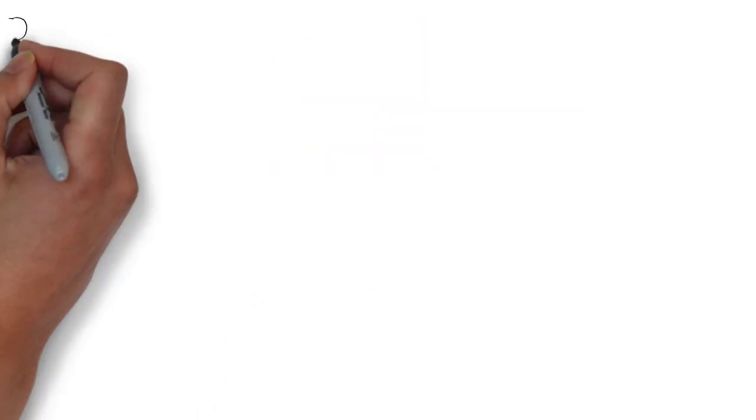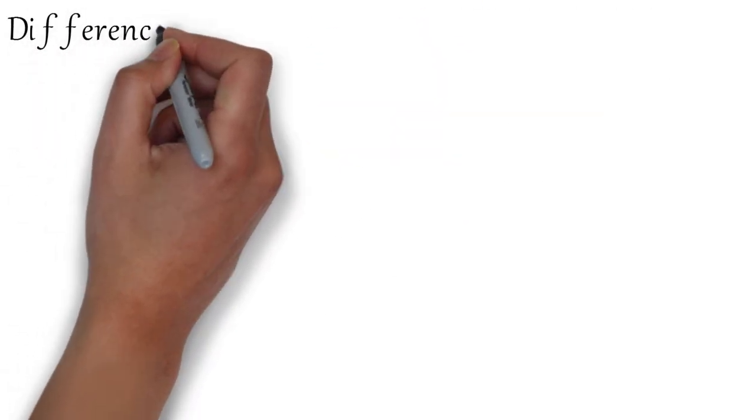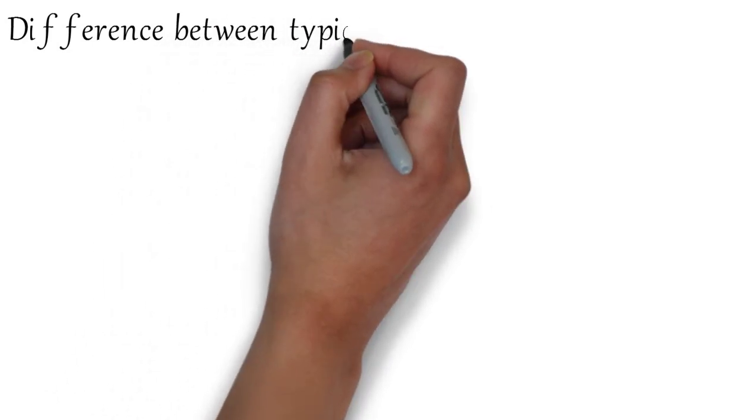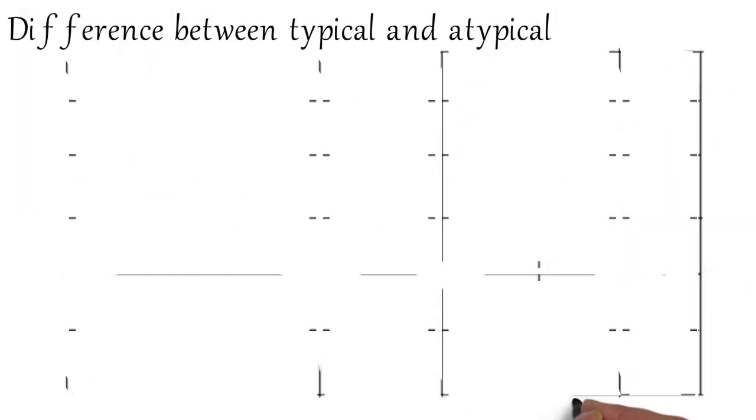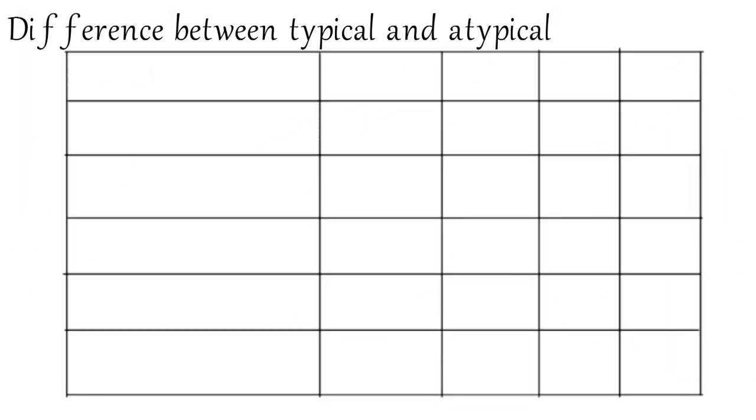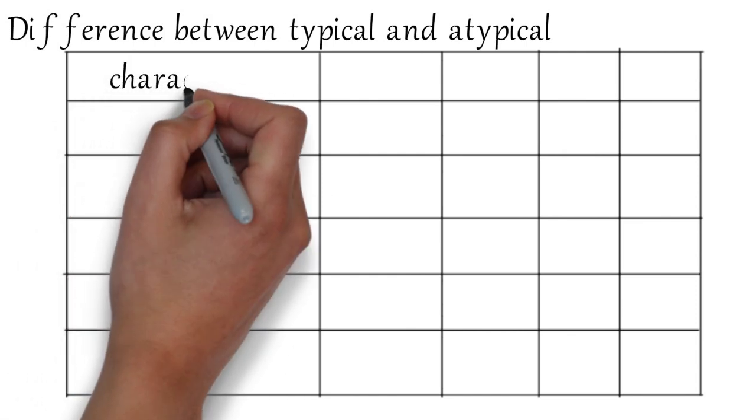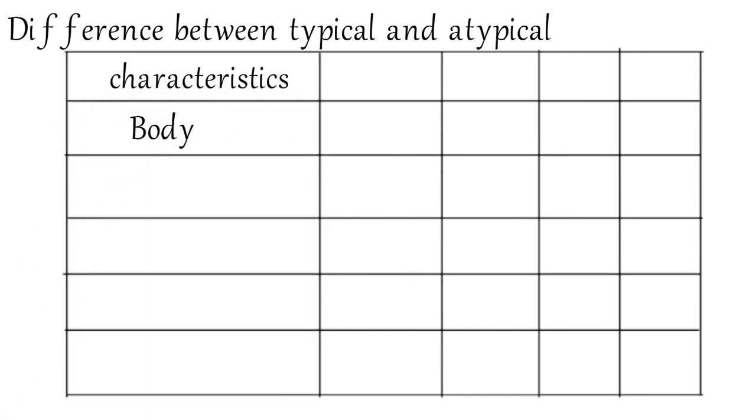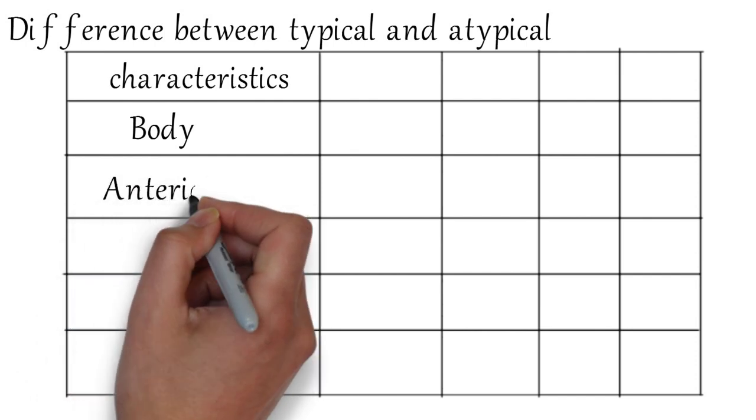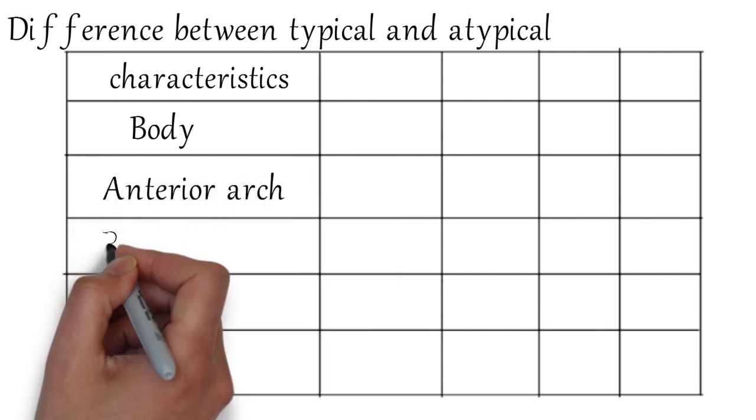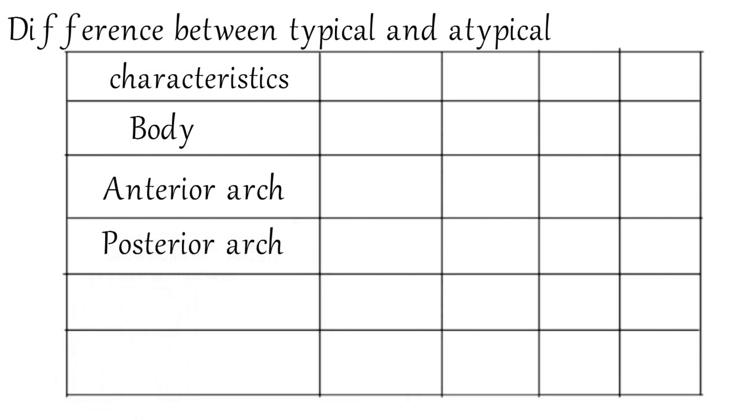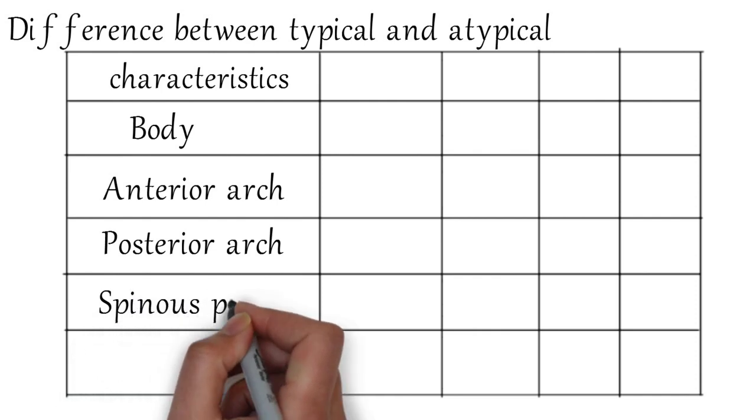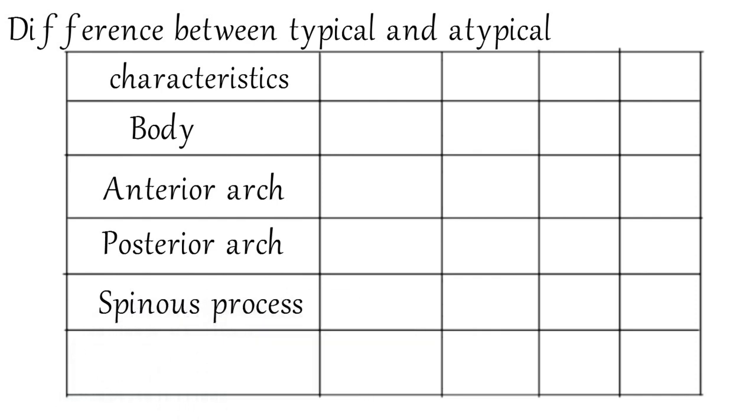Now let's see the difference between typical and atypical vertebrae. The main differentiating characteristics are: body, anterior arch, posterior arch, spinous process, and superior articular facets.